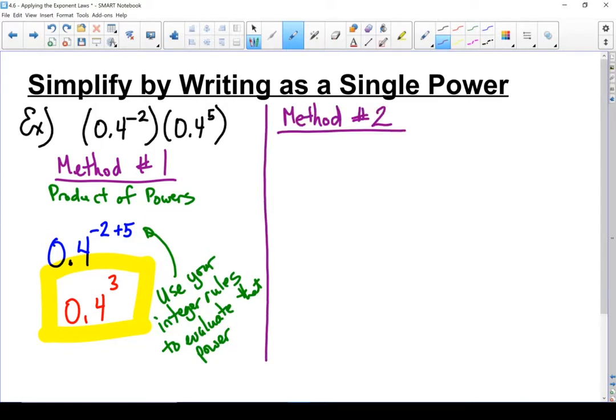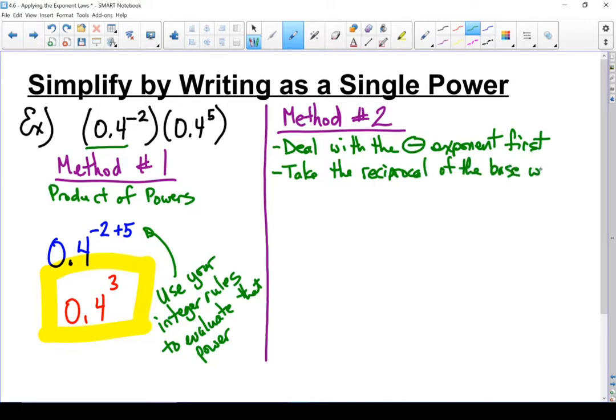In this case, we're going to deal with that negative exponent first. We're going to take the reciprocal of the base where we have the negative exponent. Just remember your rules for dealing with negative exponents. So let's rewrite that. On the bottom, I'm going to put that 0.4, and instead of to the negative 2 power, it's going to become squared. The top doesn't change.